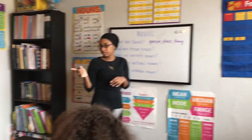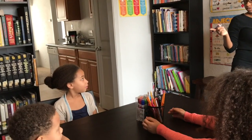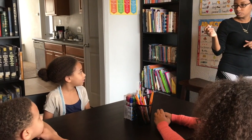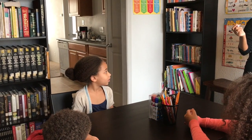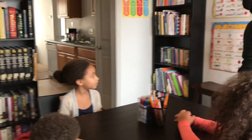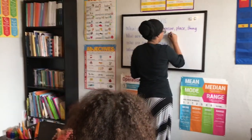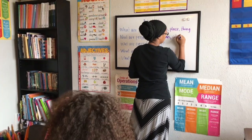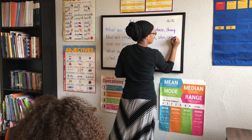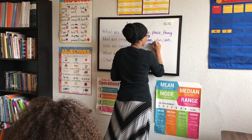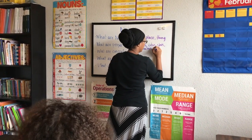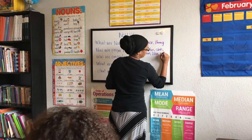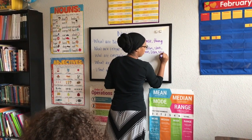Ciena, what are proper nouns? Proper nouns refer to people, cities, states, countries, days of the week, months of the year, and titles — so names. I'm going to abbreviate days of the week as DOW and months of year as MOY.